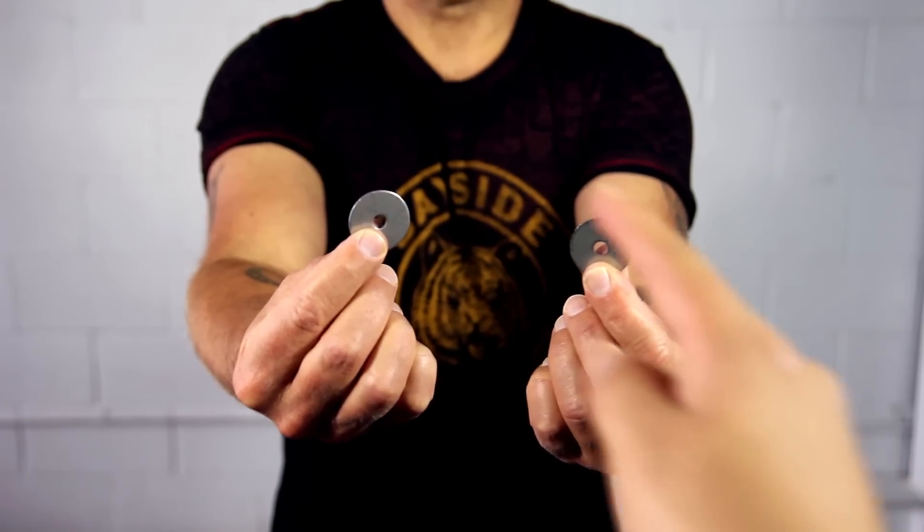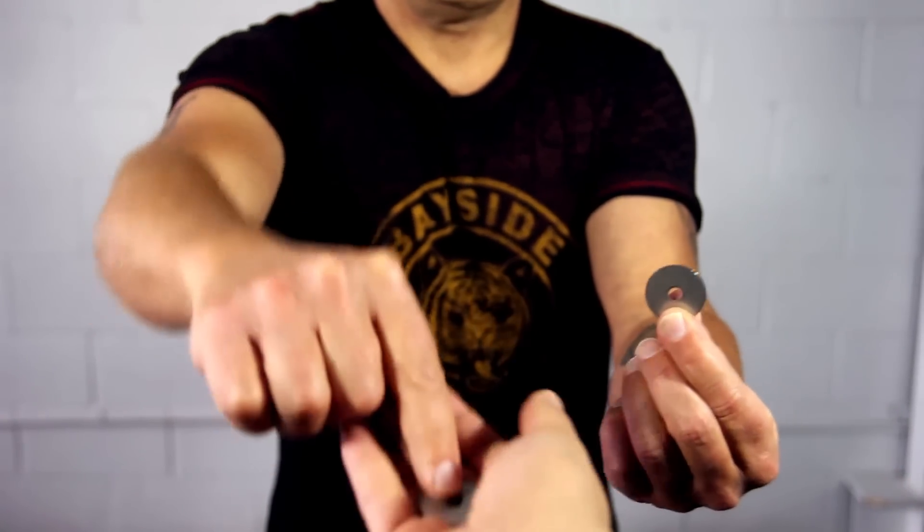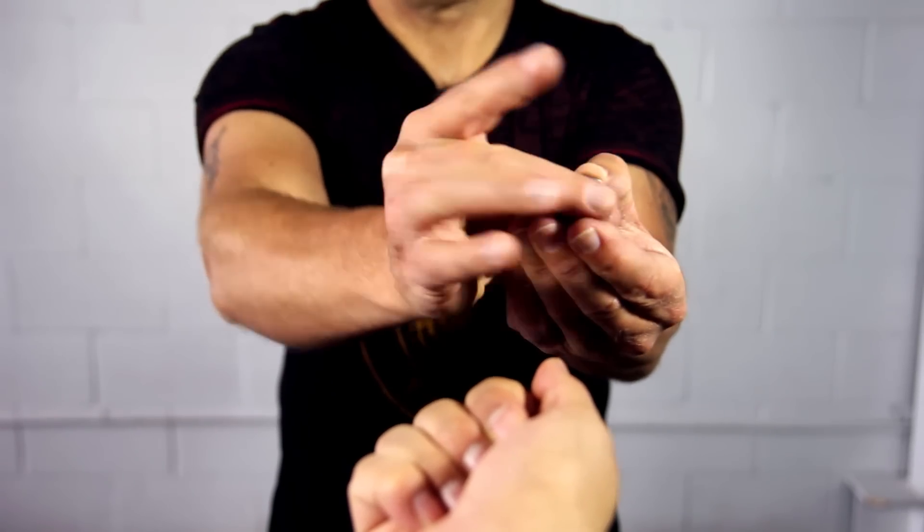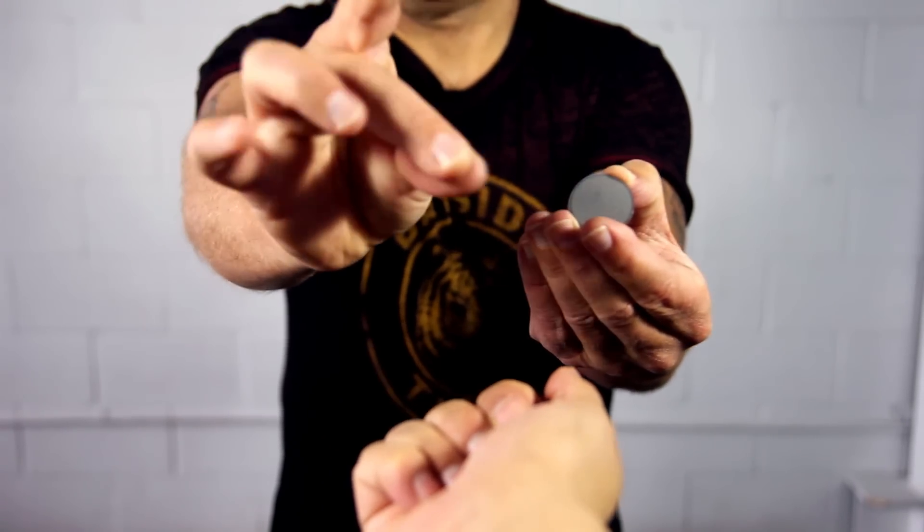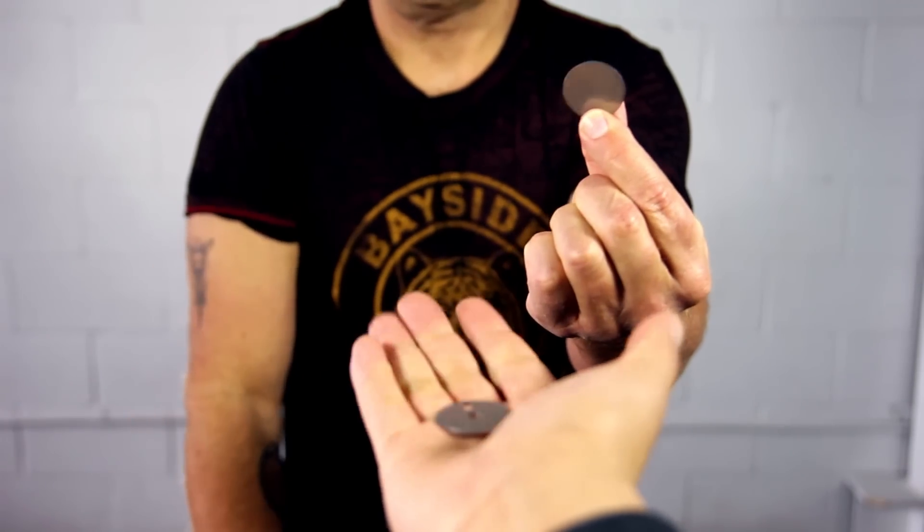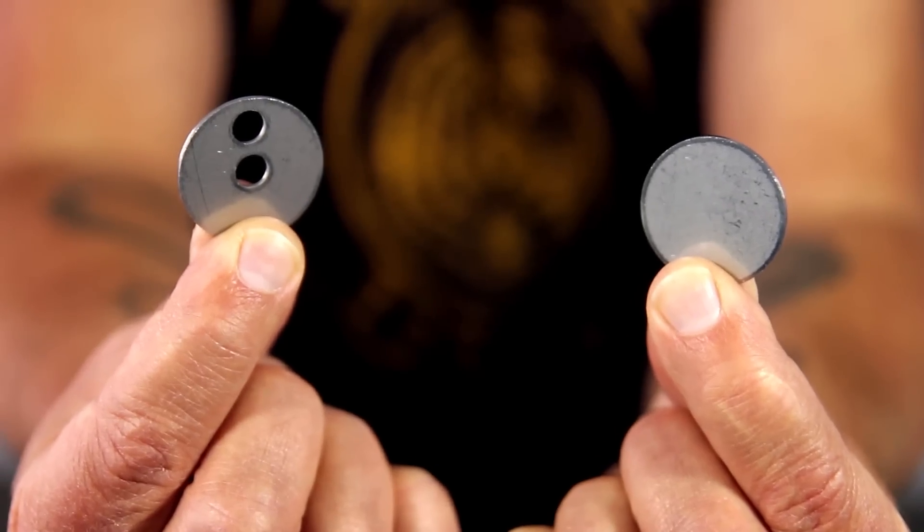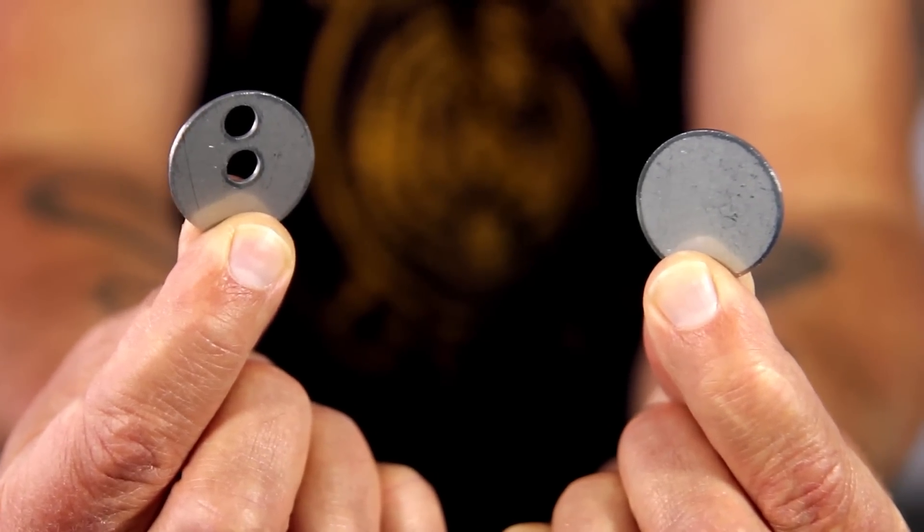A spectator freely chooses between two metal washers and tightly holds one in his own hand. The magician then visually pulls the hole off one washer and causes the hole to impossibly appear on the spectator's washer. Both washers can be immediately examined.